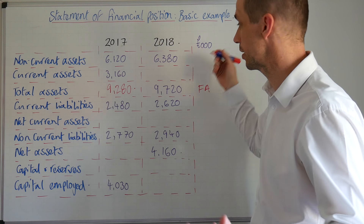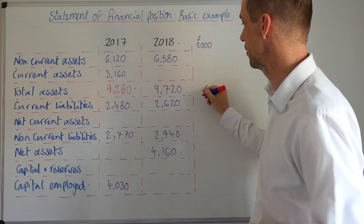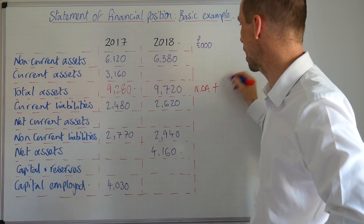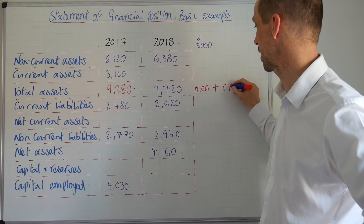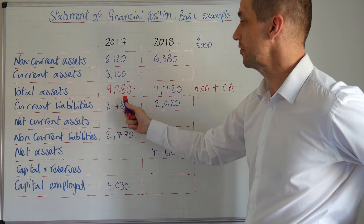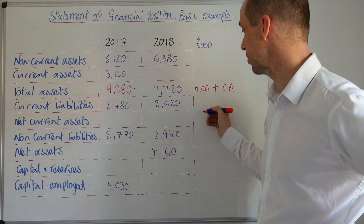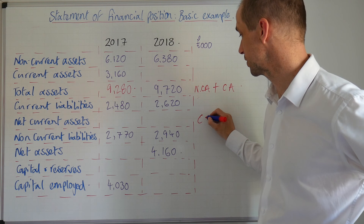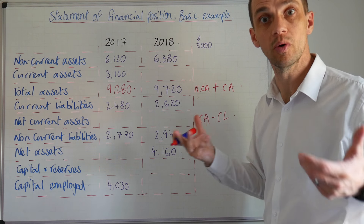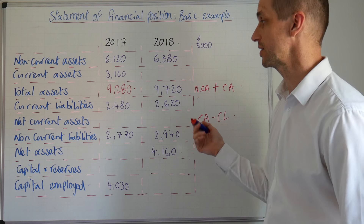It's simply the non-current assets plus the current assets that gives us our total figure. Then we've got our current liabilities and the net current assets. To work that out, we've simply got to take the current assets and subtract the current liabilities, and that will give us our net current assets figure.